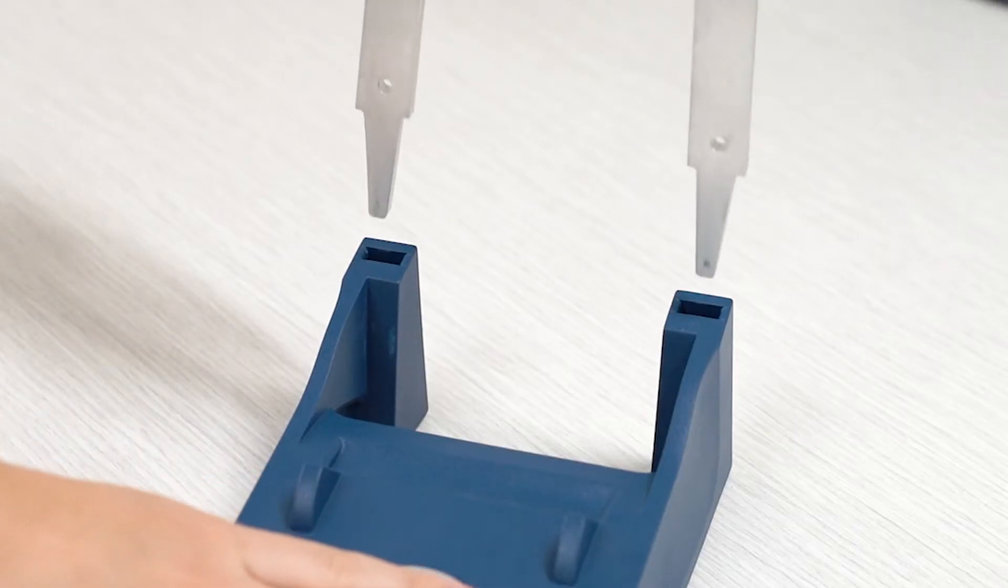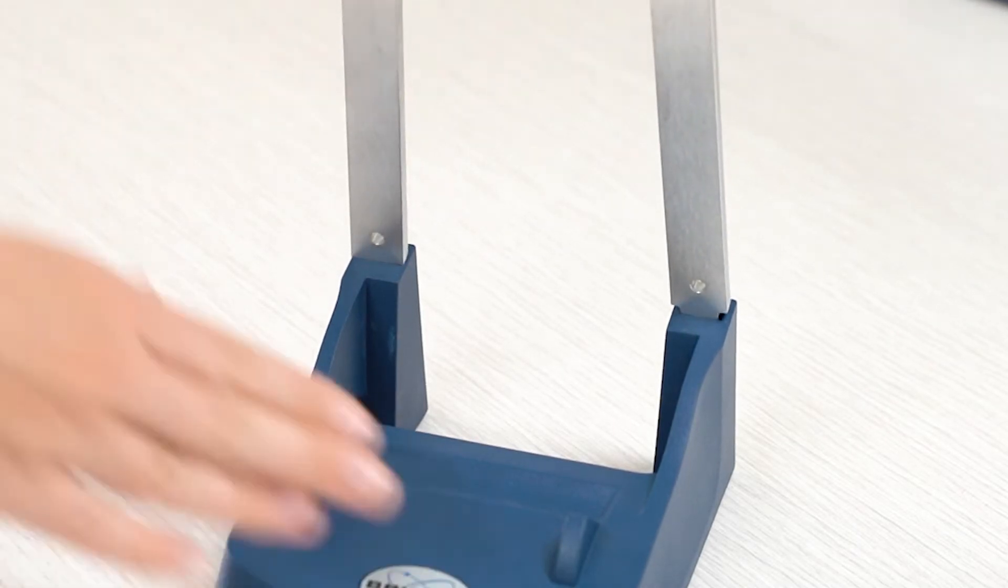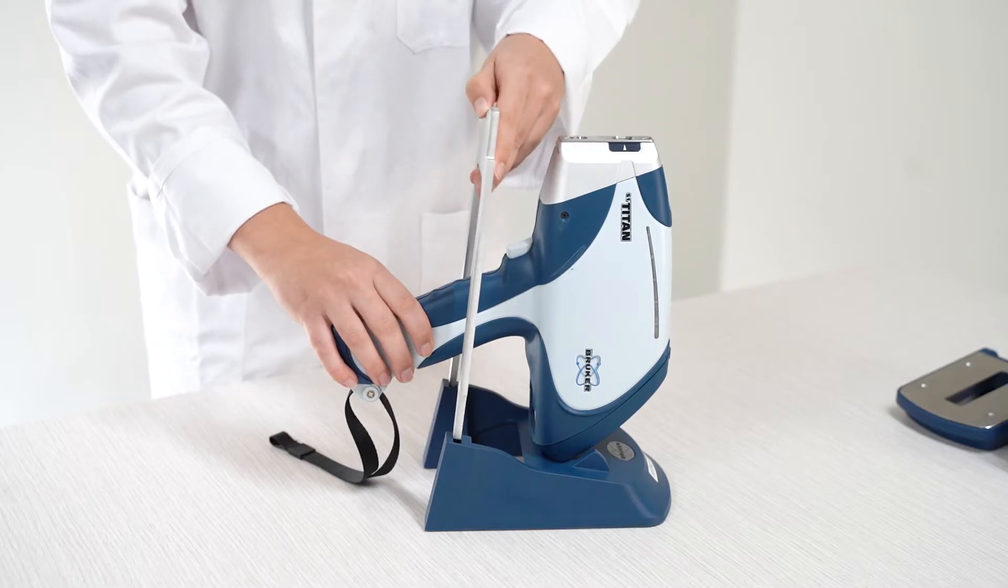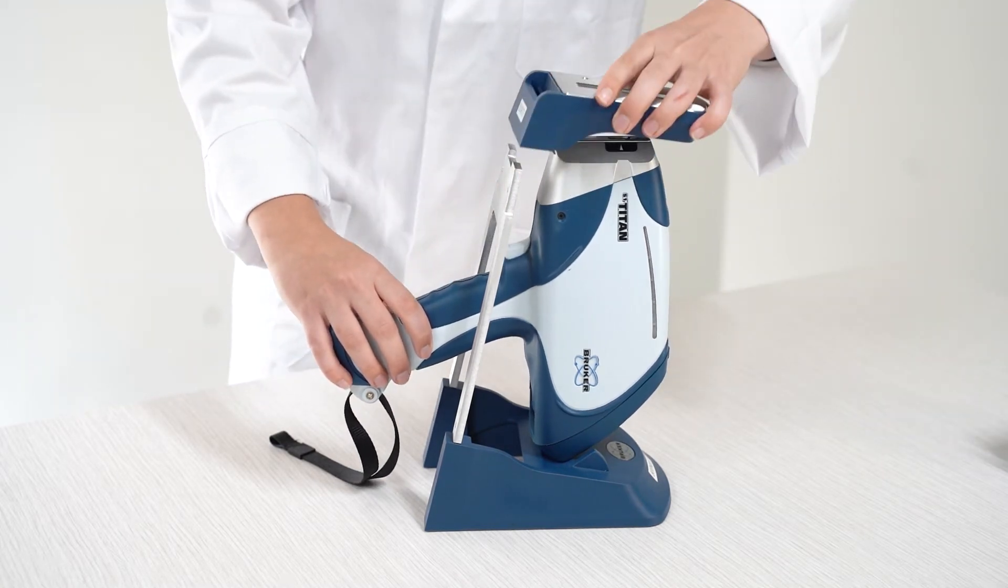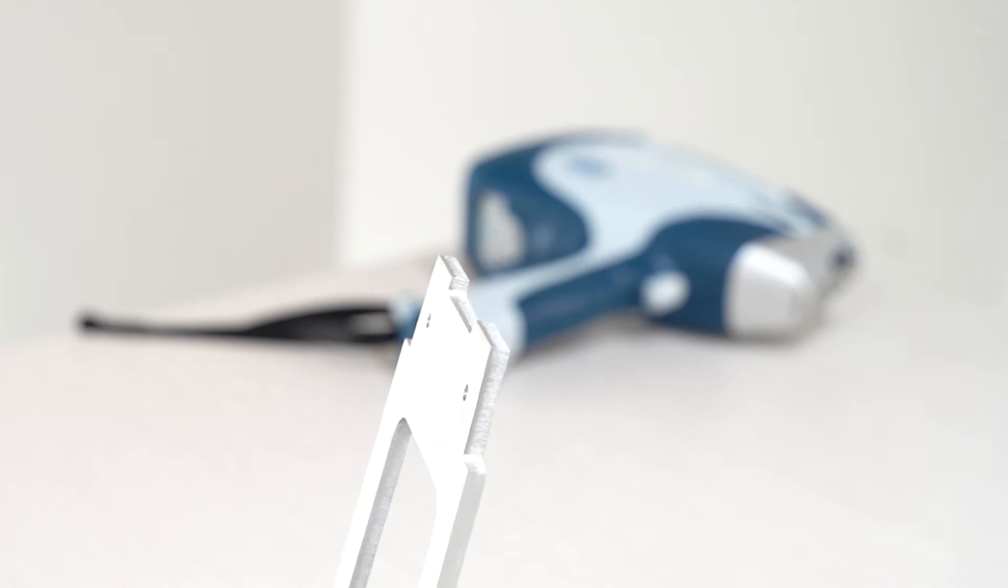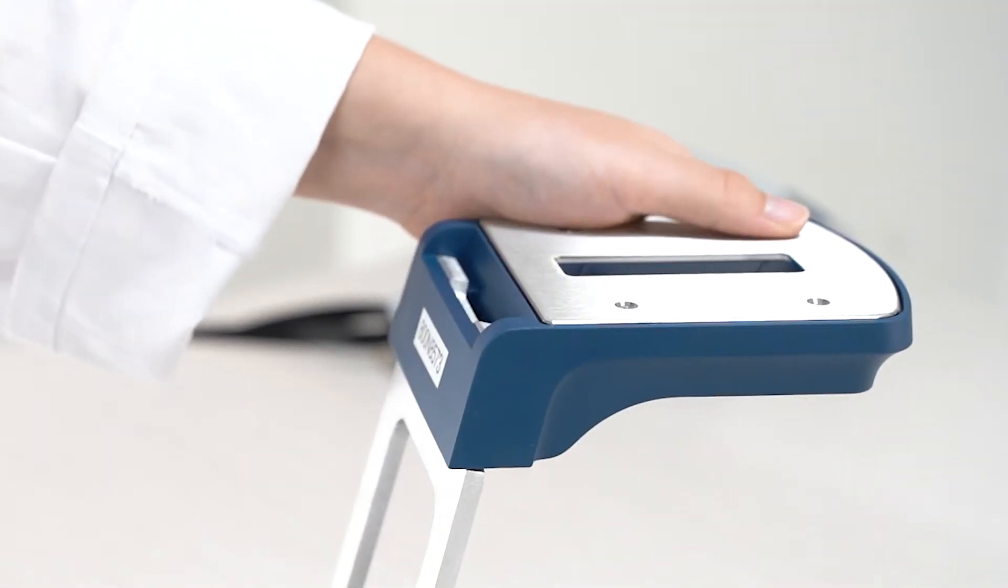Next, grab the metal part and place it into the slots in the blue base. The stage slots into the top of the metal backing. It aligns to fit the analysis plate on the instrument.